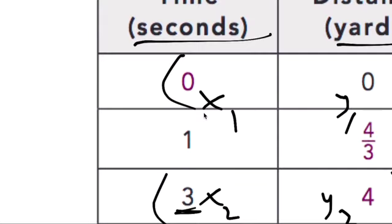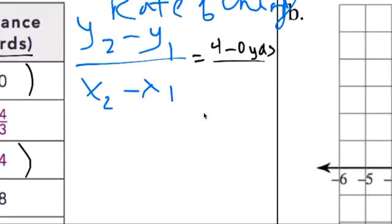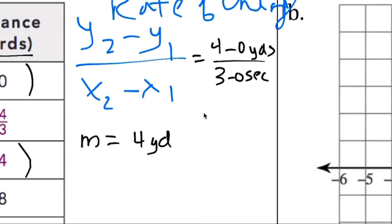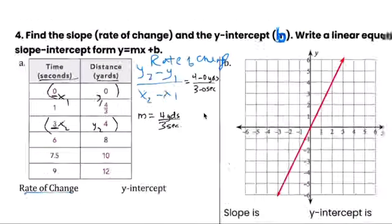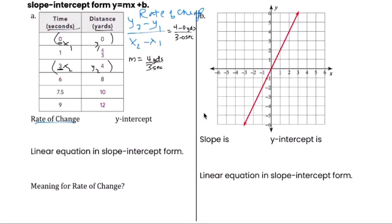So my rate of change, my m, is 4 yards every 3 seconds. So the meaning is up 4 yards.